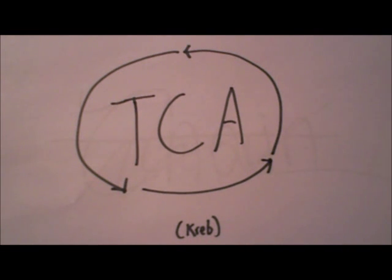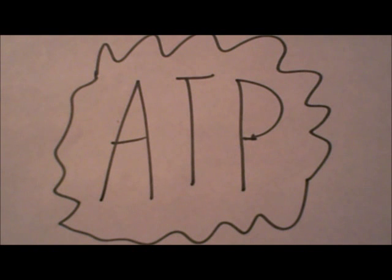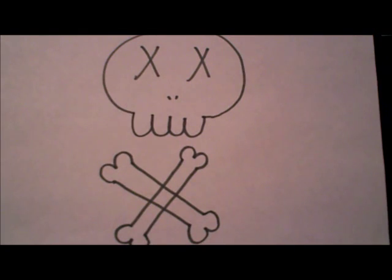In protein catabolism, amino acids have an amino group and a hydrogen taken away. The leftover carbon chains are then broken down through the TCA cycle to make ATP. There's one problem with protein catabolism — it makes ammonia, which is toxic and very deadly.